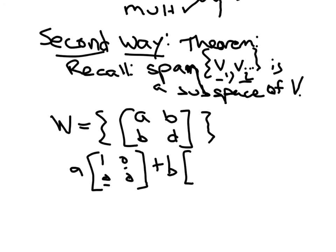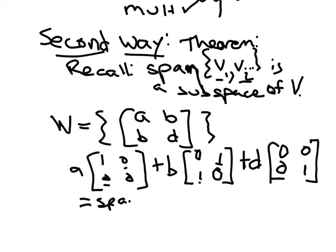plus B times this matrix, which again is symmetric, plus D times this matrix, which again is symmetric. So now we're describing W as the span of these matrices.